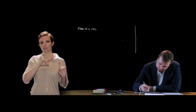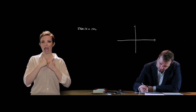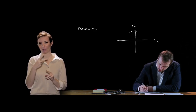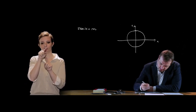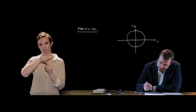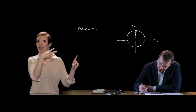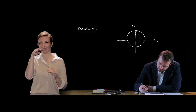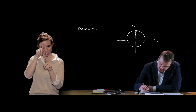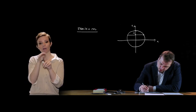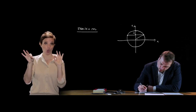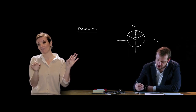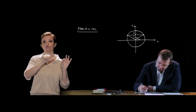Aiutiamoci con la rappresentazione grafica, sempre comoda per le equazioni goniometriche. Circonferenza goniometrica: seno di x = m vuol dire che abbiamo un certo valore m sull'asse delle ordinate, dove si legge il seno. L'angolo che stiamo cercando è quello corrispondente al punto α oppure all'angolo 180° − α.